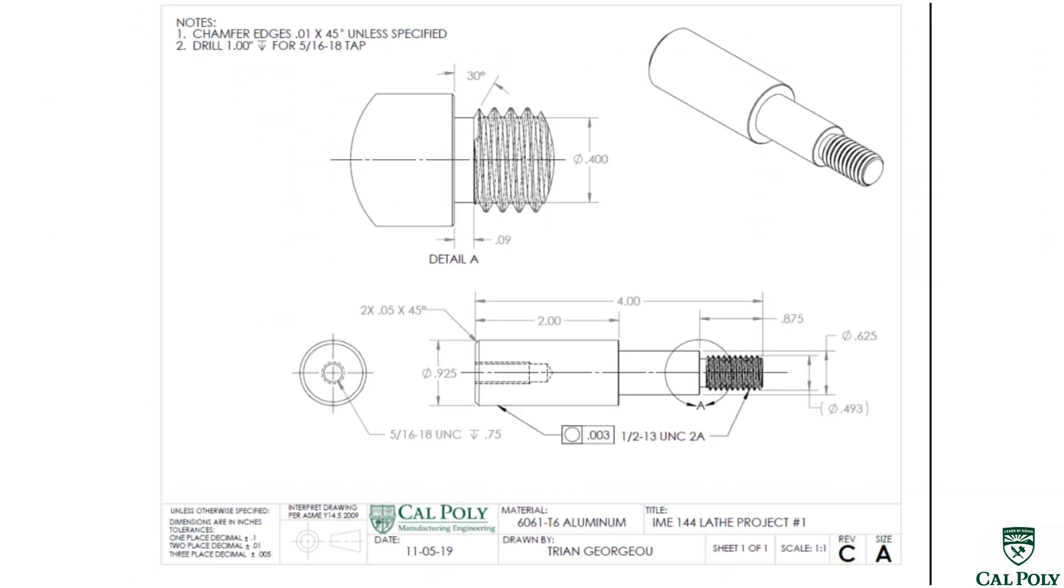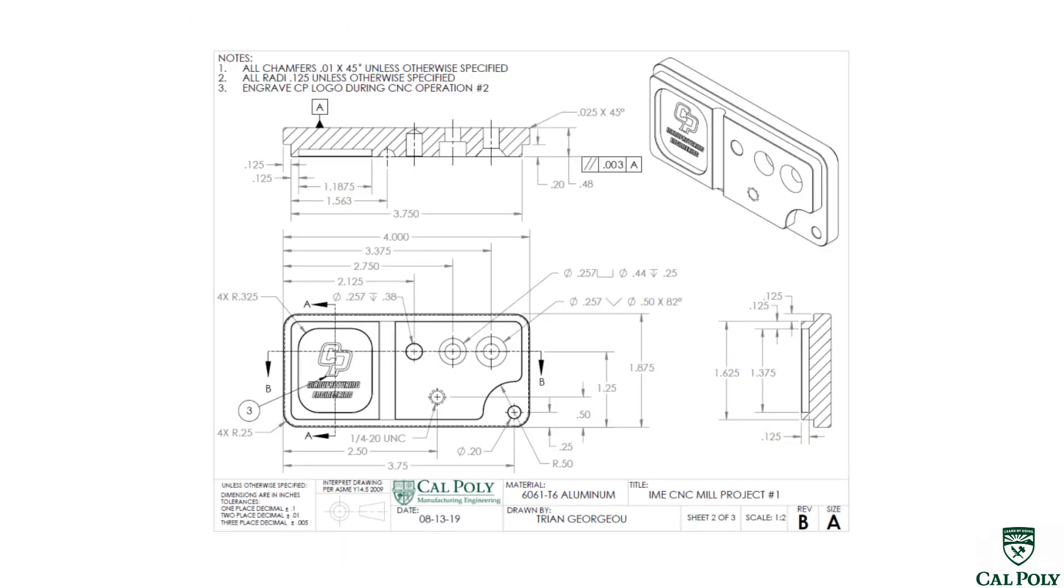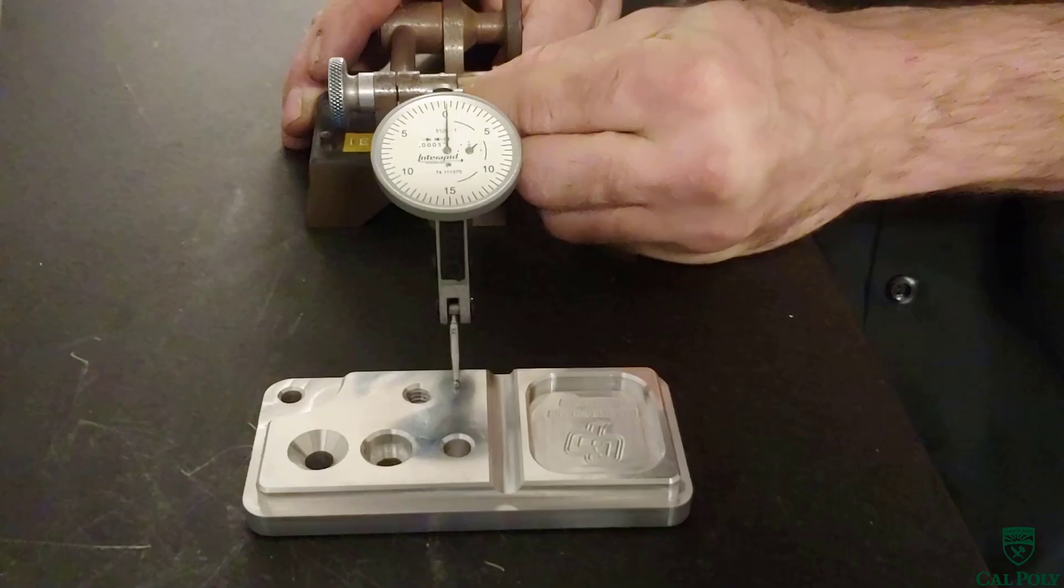Today we are going to learn how to measure our GD&T callouts for the lathe and mill project. First we will start with the GD&T callout for parallelism on the mill project. Parallelism is how parallel two faces are relative to each other.